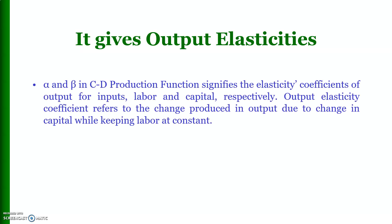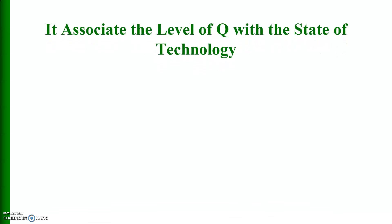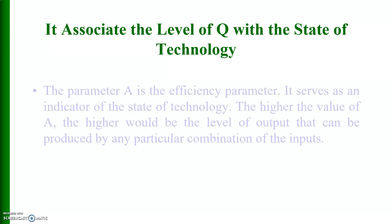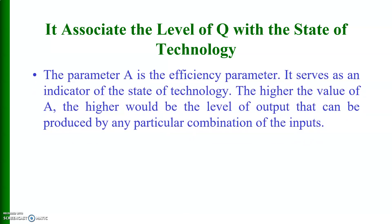The Cobb-Douglas production function gives output elasticities. Alpha and beta in the Cobb-Douglas production function signify the elasticity coefficients of output for inputs labor and capital respectively. Output elasticity coefficient refers to the change produced in output due to change in capital while keeping other inputs constant. The parameter A, known as the efficiency parameter, serves as an indicator of the state of technology. The higher the value of A, the higher would be the level of output that can be produced by any particular combination of inputs.